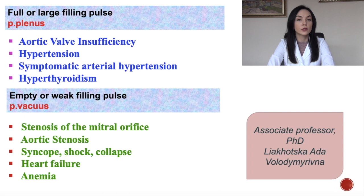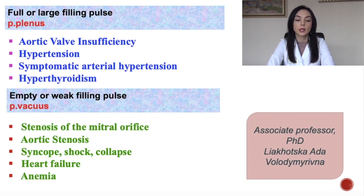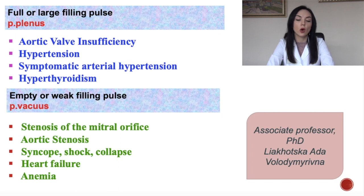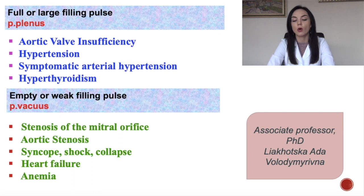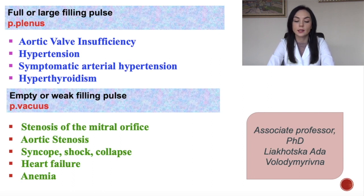Full or large filling pulse is called pulsus plenus. It can occur during aortic valve insufficiency, hypertension, hyperthyroidism, and symptomatic arterial hypertension. An empty or weak filling pulse is called pulsus vacuus. It can occur during aortic stenosis, syncope, shock, collapse, mitral stenosis, heart failure, and anemia.